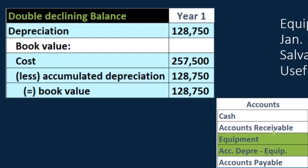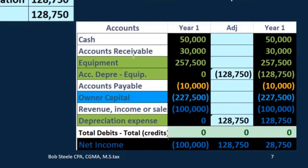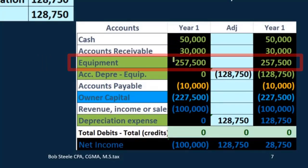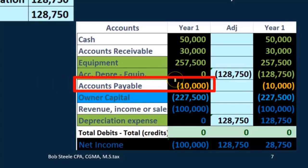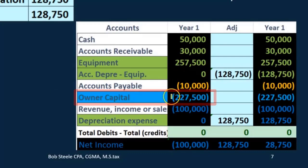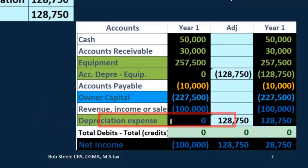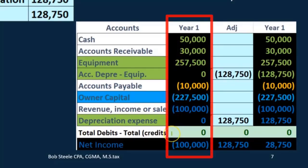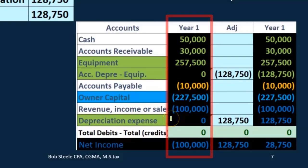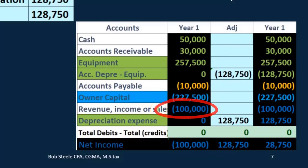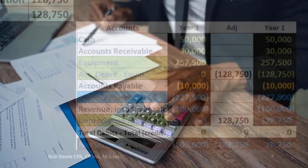Looking at the journal entry, the format is the same as before — just with a larger number. If we look at a trial balance for year one: we have cash, receivables, equipment on the books at $257,500, accumulated depreciation before the adjusting entry of zero, a liability of $10,000, a capital account, and revenue. The depreciation expense has not yet been recorded. Debits equal credits — we are in balance, with net income of $100,000 before the depreciation entry.